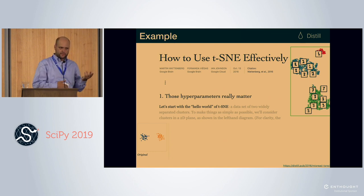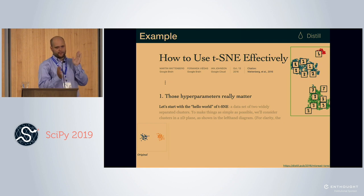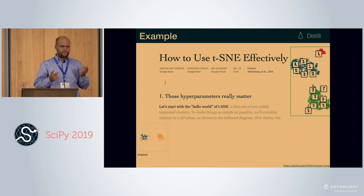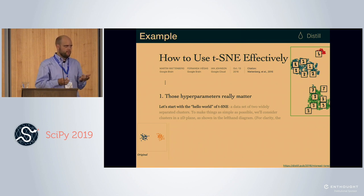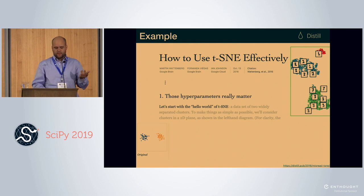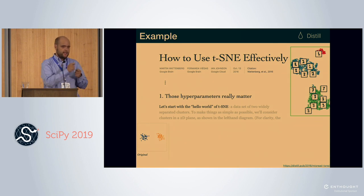Let's say we have a bunch of 28-by-28 images of handwritten digits. Because they're 28-by-28 and the features are just the pixels, they're all 784 dimensions. A lot of pixels are white and all the threes look pretty much the same, so it'd be nice to represent each example with just two features. t-SNE is the tool to go from 784 features to two features.